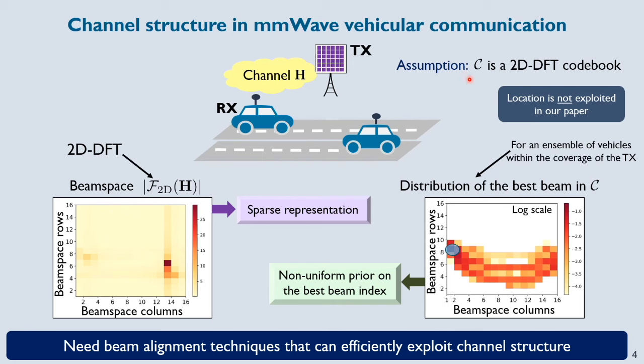In this work, we consider a 2D DFT based codebook at the transmitter. In an exhaustive search based approach where the transmitter applies elements of the 2D DFT codebook, the receiver acquires entries of the beamspace channel shown here. Interestingly, beamspace channels at millimeter wave exhibit a sparse structure due to the special propagation characteristics of the millimeter wave environment. But let me tell you that there's some additional structure that can be exploited in vehicular communication scenarios.